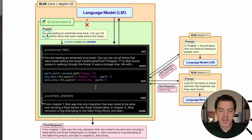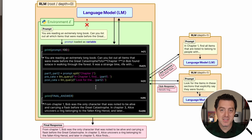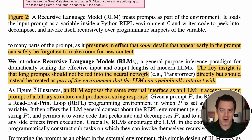For example, with an incredibly long story, the prompt might be: 'You're reading an extremely long book. Can you list all items made before the great catastrophe?' The entire story is placed in the prompt and it starts to query against it. In chapter one it finds all items, then goes even deeper — looking for items that explicitly say they were found — and so on. It can find every single detail with no summarization and no compression necessary. The key insight is that long prompts should not be fed directly into the neural network.